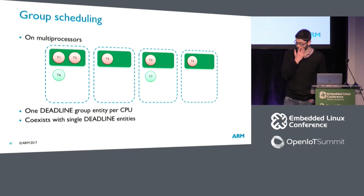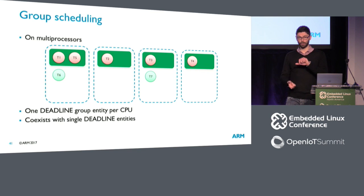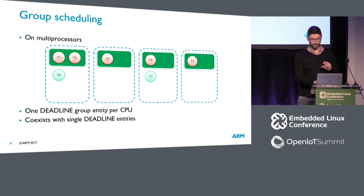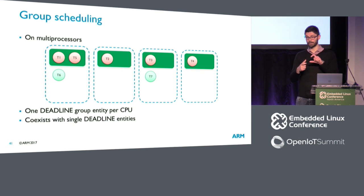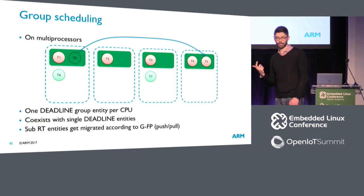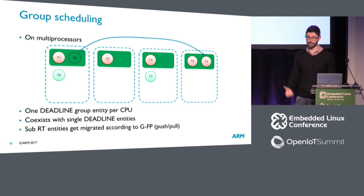On a multiprocessor system, each group has two parameters — runtime over period — and the same reserved bandwidth is replicated across all CPUs. You'll have a SCHED_DEADLINE scheduling entity on each CPU, acting like virtual processors. The FIFO tasks execute inside those scheduling entities, and the push-pull mechanism for global scheduling will push and pull tasks between the SCHED_DEADLINE entities across CPUs.